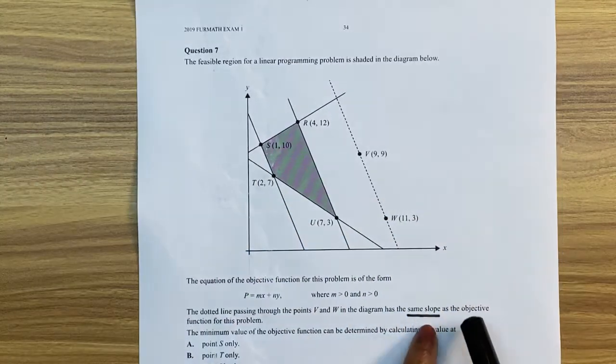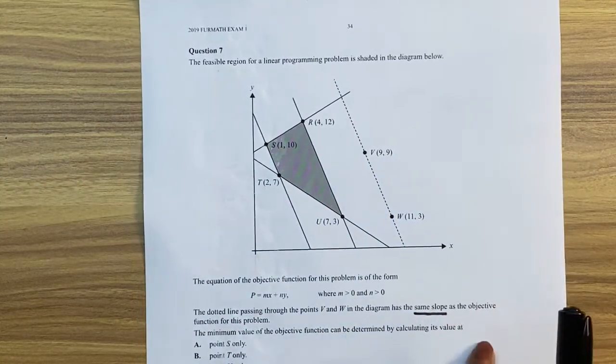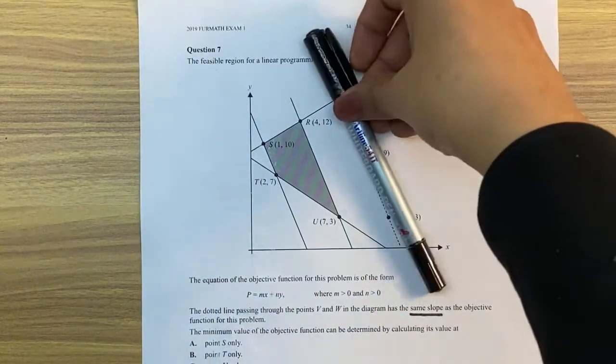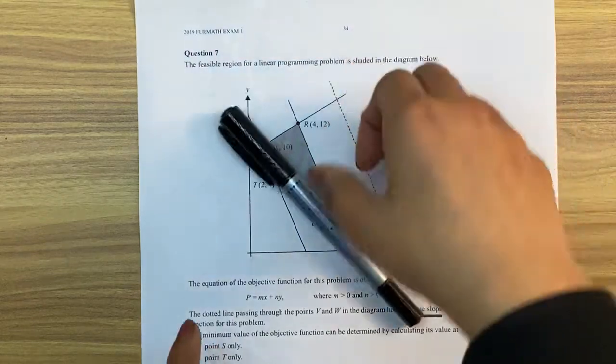So if the objective function has the same slope as the dotted line, then that means this line is our sliding line. So what is the question asking us for?